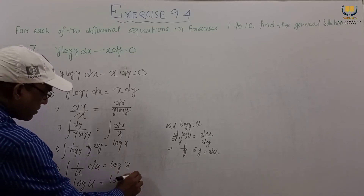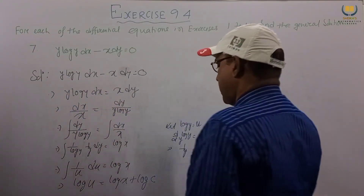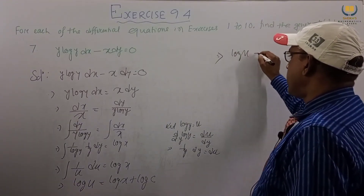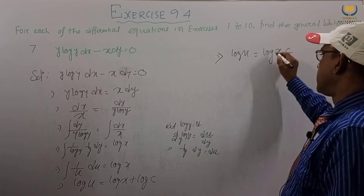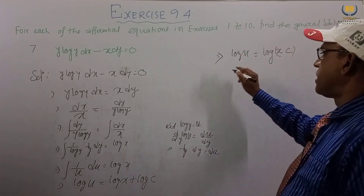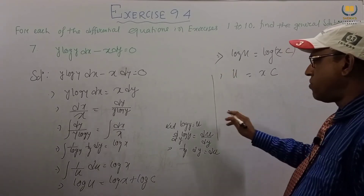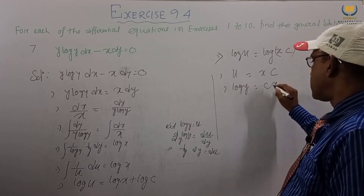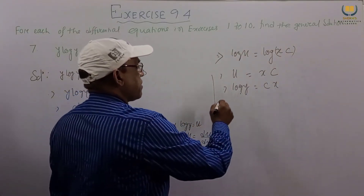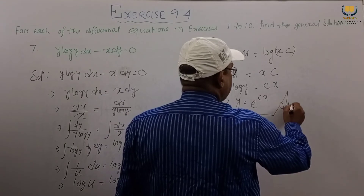So we get log u equals log x plus log c, where we write the constant as log c since both sides are logarithms. This gives log u equals log(cx), so u equals cx. Since u equals log y, we have log y equals cx, therefore y equals e^(cx). This is the final answer for problem 7.